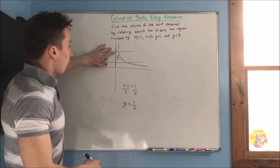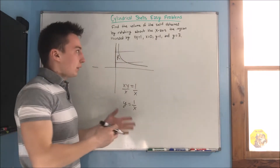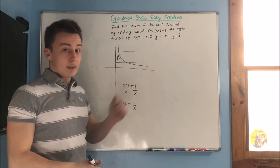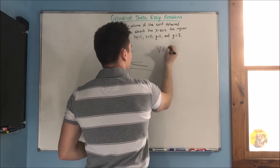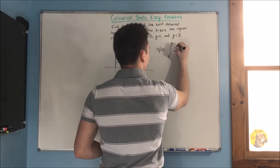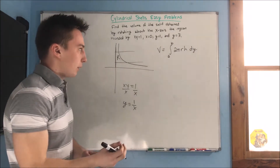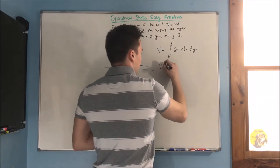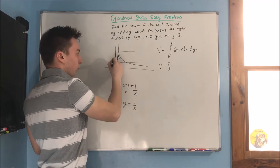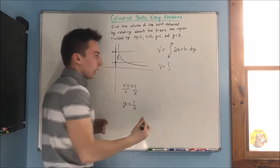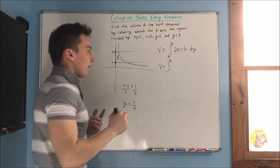We have to rotate that about the x-axis. Since we're rotating about the x-axis — a horizontal line — we're going to be integrating with respect to y this time. Our formula is volume equals the integral from a to b of 2π r, times dy. Our lower bound is 1 and our upper bound is 3, because our equations were y equals 1 and y equals 3.